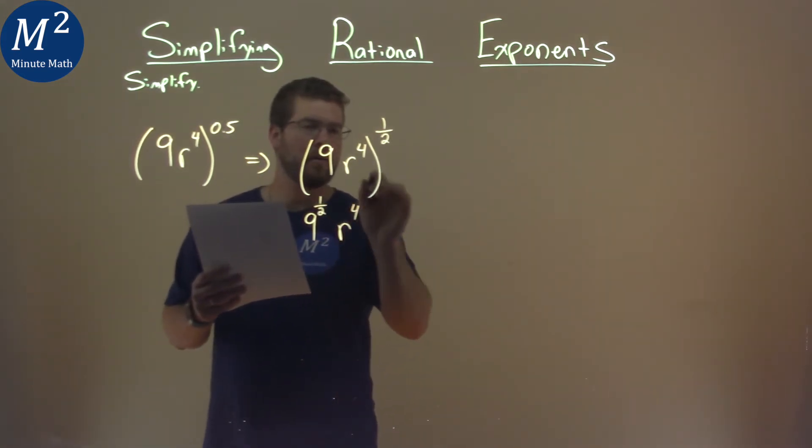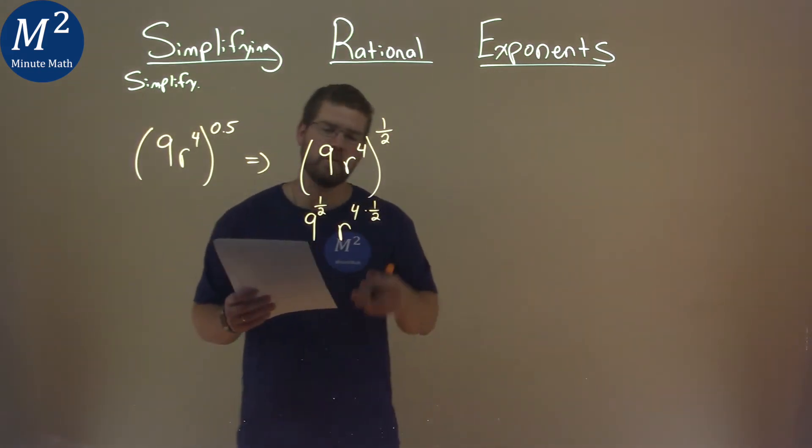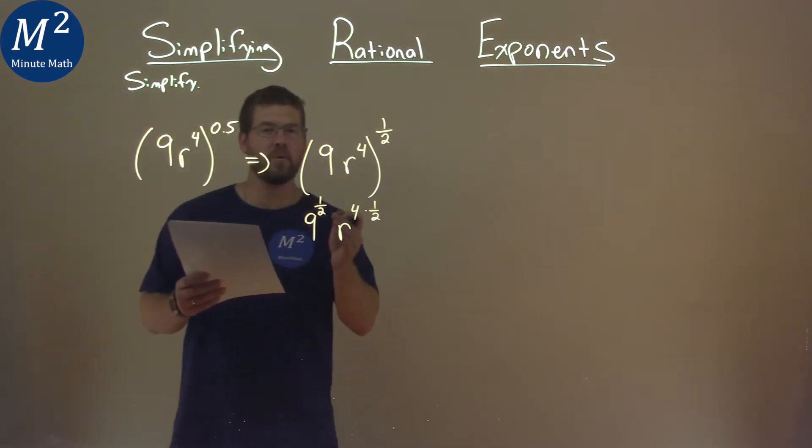r is gonna be that 4th power, but when we distribute the one half, we multiply the exponents here. So 9 to the one half times r to the 4 times one half.